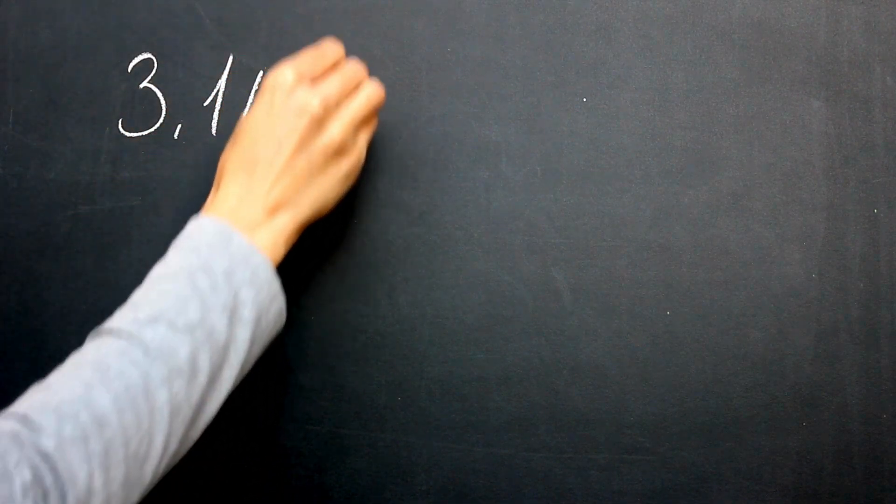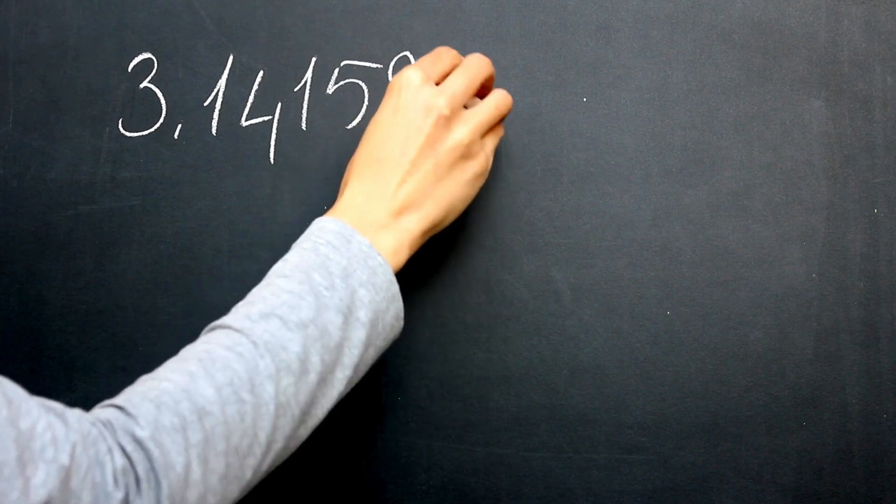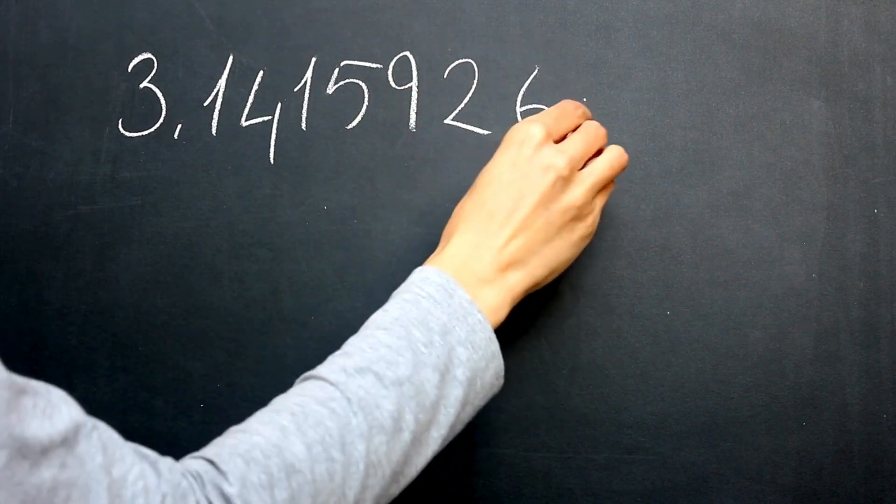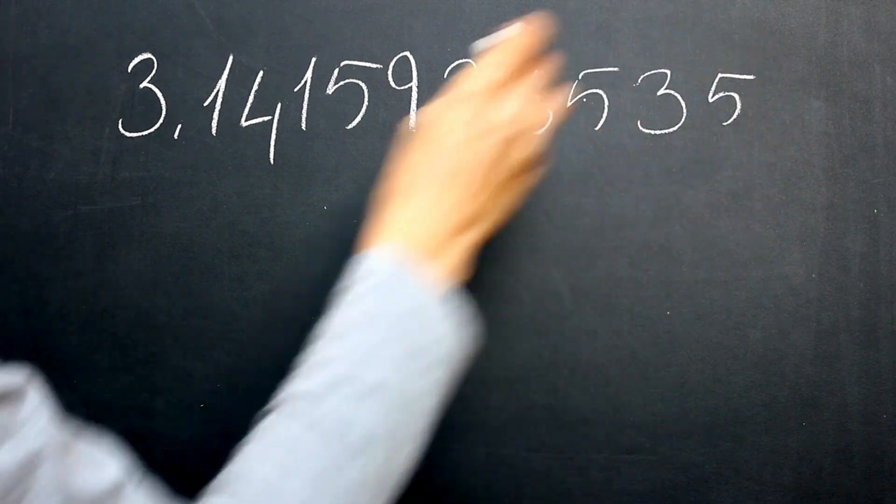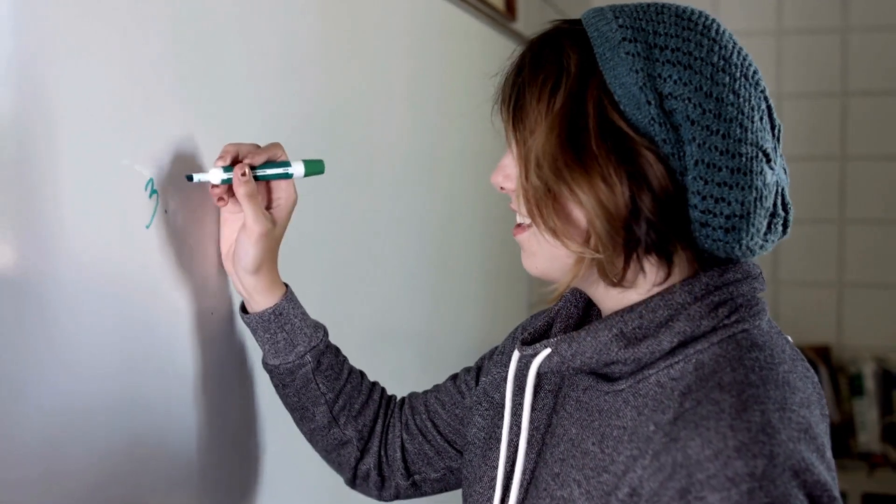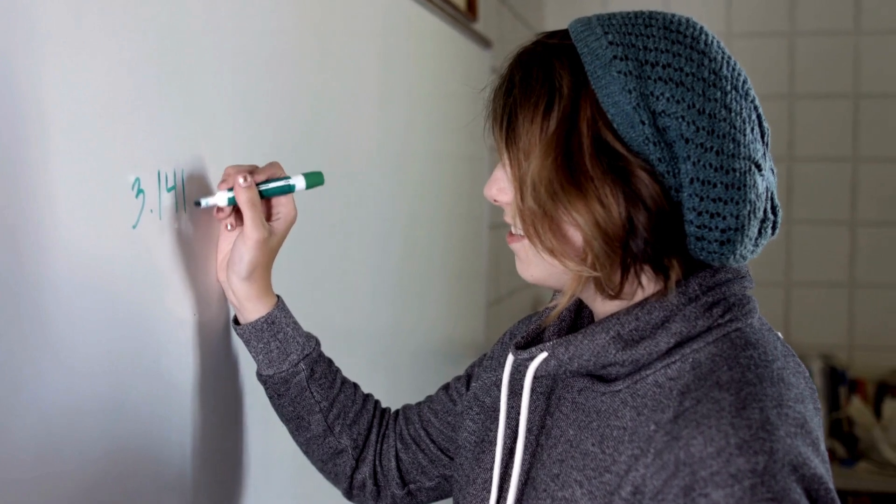The discovery of pi dates back to ancient civilizations, with early approximations found in Babylonian and Egyptian texts. Archimedes of Syracuse made significant contributions to the understanding of pi using polygons to estimate its value with increasing accuracy.